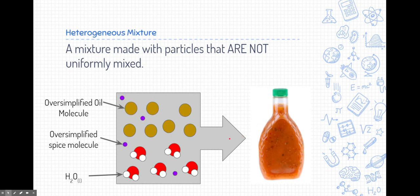So let's go ahead and take a look at the molecular model or the micro-level model of that. So here we have our water molecules, H2O. And then we've oversimplified the oil and the spice particles. But take a look. They're not really uniformly mixed. In fact, a lot of you who might be familiar with vinaigrette dressings, you even know that the oil and the water separate themselves into different distinct layers.